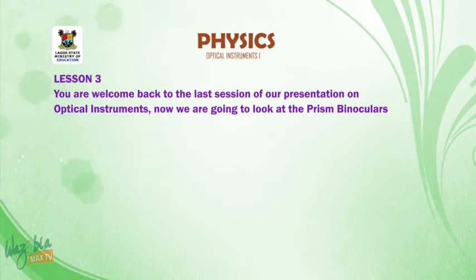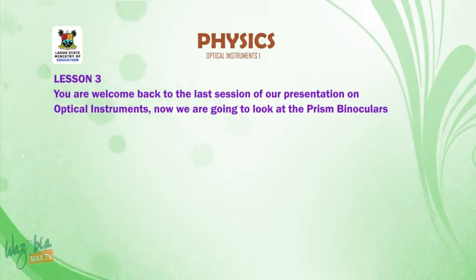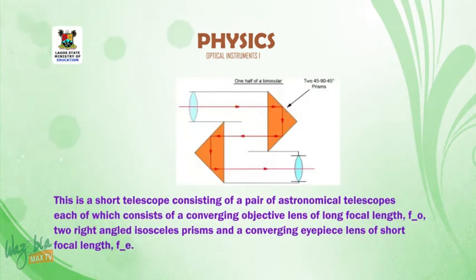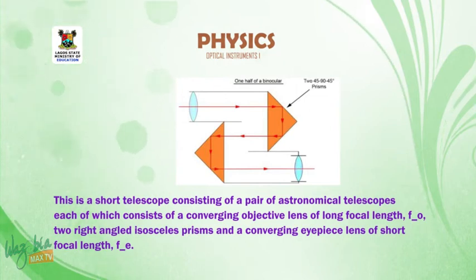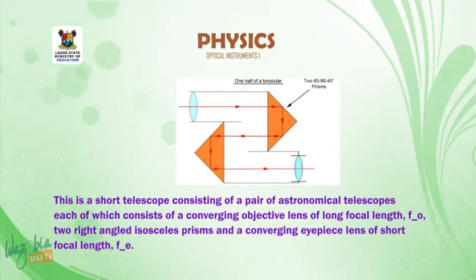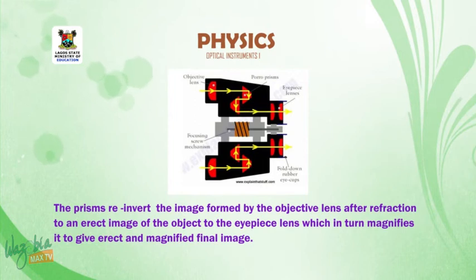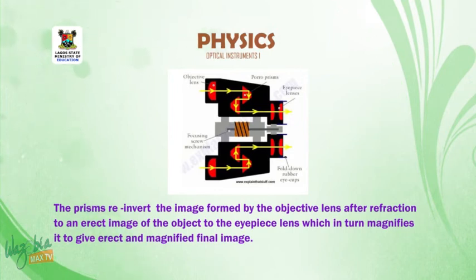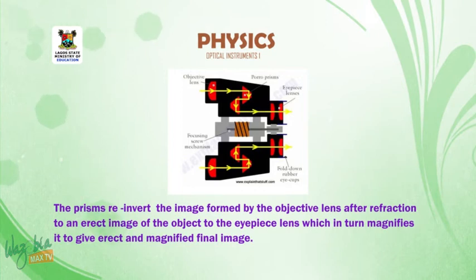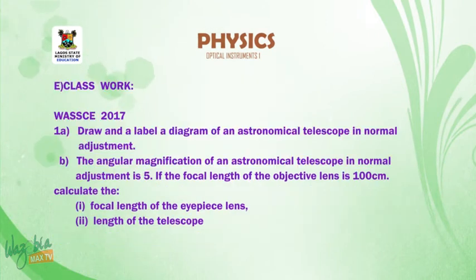Welcome back to the last session on optical instruments. The prism binoculars is a short telescope consisting of a pair of astronomical telescopes, each of which consists of a converging objective lens of long focal length, two right-angled isosceles prisms, and a converging eyepiece lens of short focal length. The prisms re-invert the image formed by the objective lens to an erect image for the eyepiece lens, which in turn magnifies it to give an erect and magnified final image.